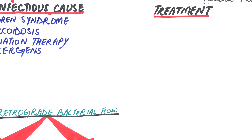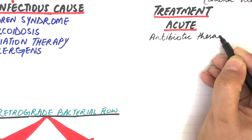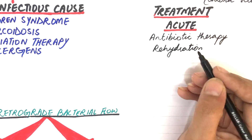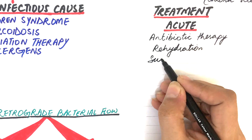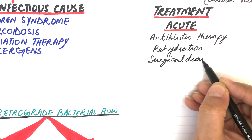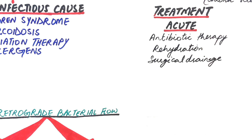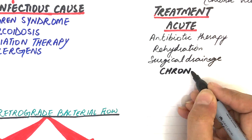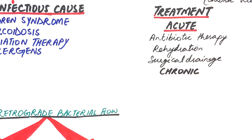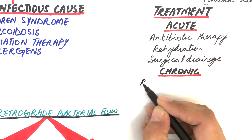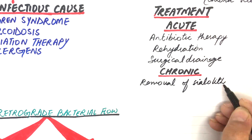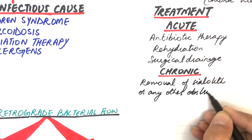Acute bacterial sialadenitis is best treated by antibiotic therapy and rehydration of the patient. Surgical drainage may also be done in cases where an abscess is encountered. In case of chronic sialadenitis, since it mostly results from ductal obstruction by a sialolith, early cases respond well with removal of the sialolith or any other obstruction.